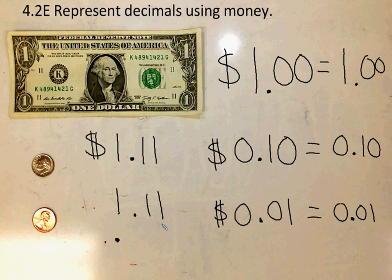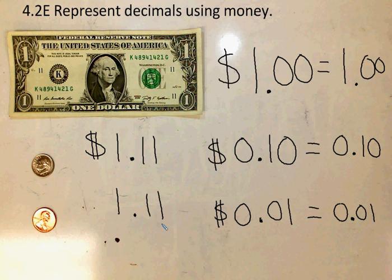Whenever I read a decimal, I say what the place value of the last digit is. The last place value here is in the hundredths place, so I read that as one and eleven hundredths.